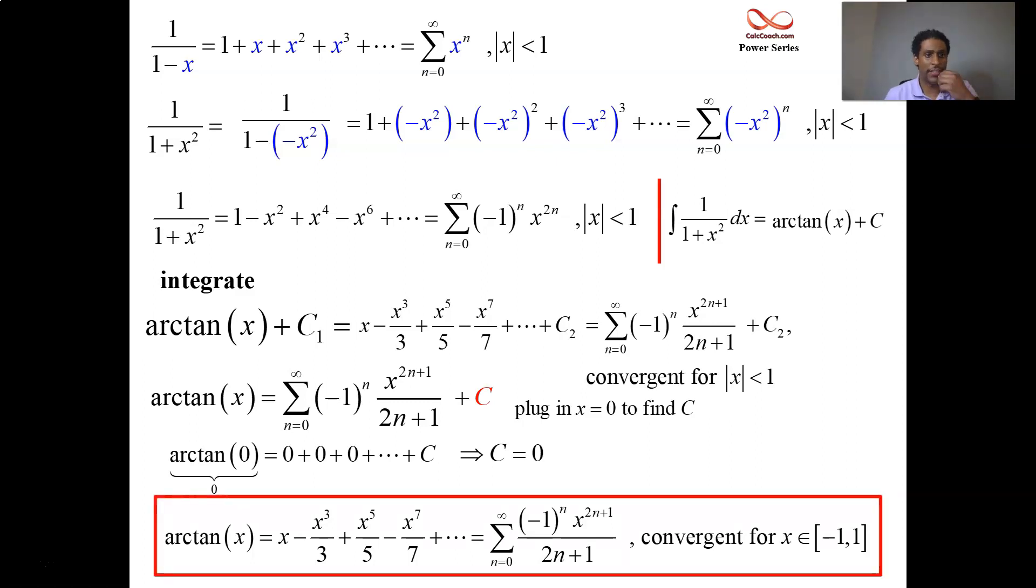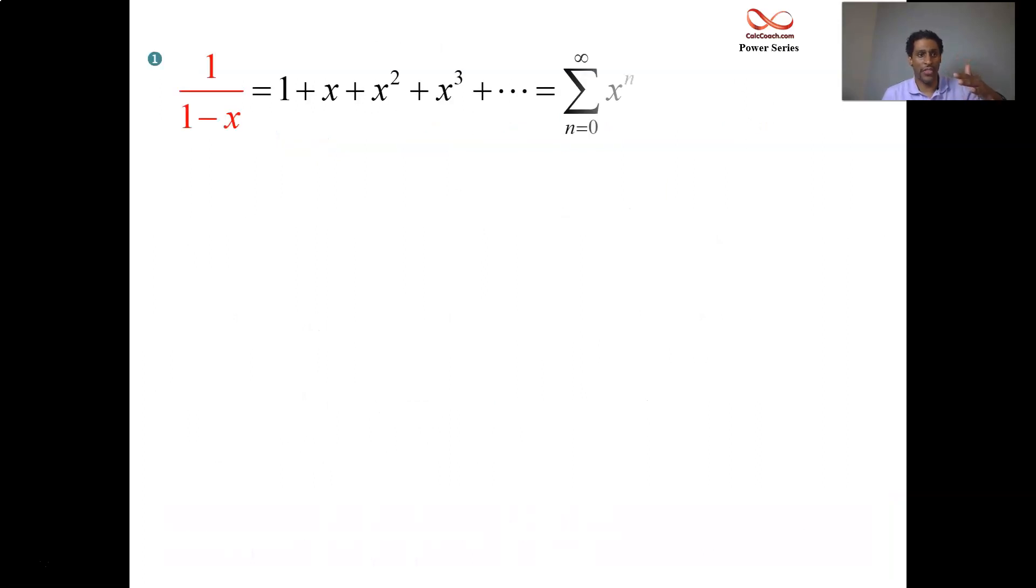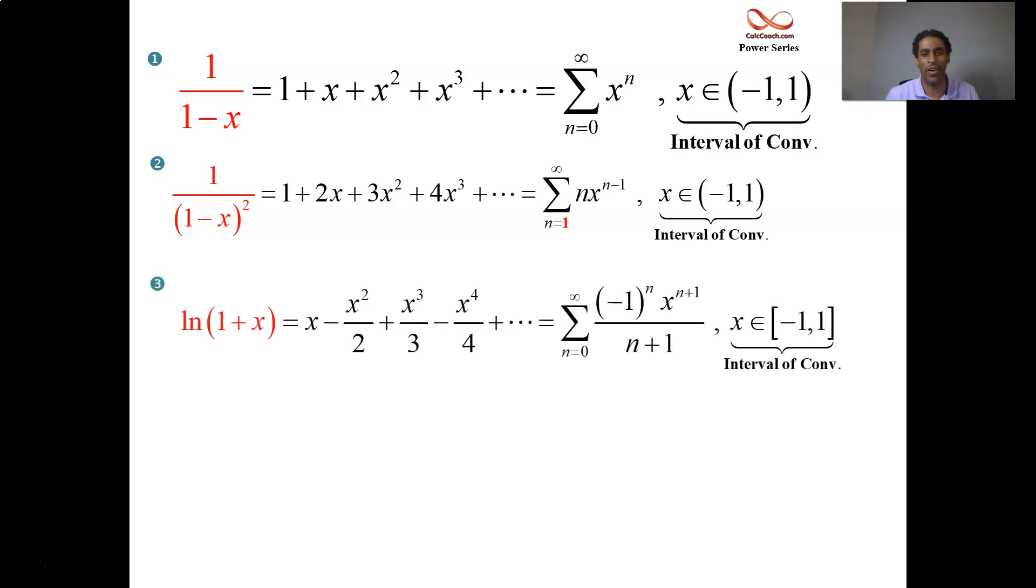Now this is number four on our list. Let's go to the list. We start with the geometric series, convergent for any x's between minus 1 and 1. We took its derivative to get 1 over 1 minus x quantity squared's power series representation. Then we altered 1 over 1 minus x by making it 1 over 1 plus x.